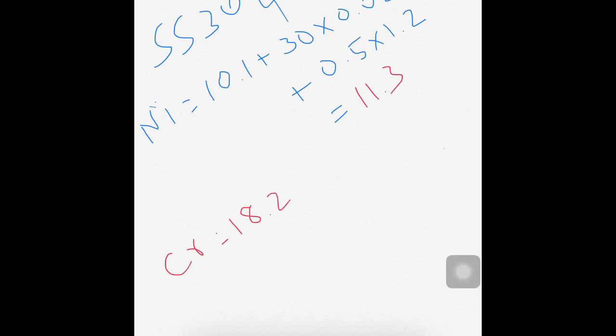To find out the nickel and chromium equivalent for SS304L material, here the chromium percentage is 18 percent, nickel is 10 percent, manganese is 1.2, silicon is 0.4 percent, and carbon is 0.03 percent. To find out the nickel equivalent, the value will be around 11.3. To find out the chromium equivalent, here there will be no molybdenum and no niobium, so that will be 0. So 18.2 plus 1.5 into 0.4 equivalent to 18.8. So chromium equivalent value for SS304L material is 18.8 and nickel equivalent is 11.3.